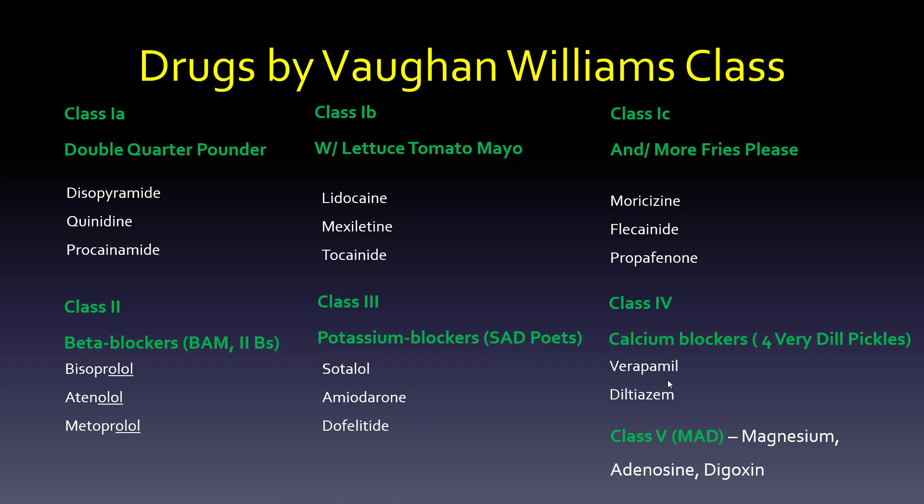For class 2, the beta blockers, the nice thing is the endings are the same. So it's bisoprolol, atenolol, metoprolol — all ending in -olol. I use the mnemonic BAM: B-A-M for bisoprolol, atenolol, metoprolol. You can also think of class 2 because beta blocker has two B's, to remind you it's class 2.